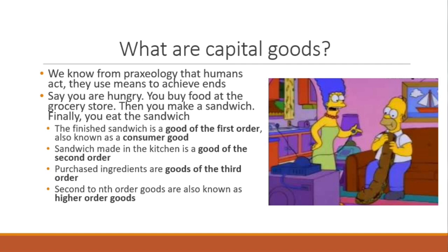This is basic Mengerian economics. We know from praxeology that humans act — they use means to achieve ends. Let's say you're hungry: you have an end, you want to feel satiated. So you buy food at the grocery store, then you make a sandwich, and then you eat the sandwich. The finished good is known as a good of the first order — a consumer good that can satisfy our ends. So the finished sandwich eaten in front of the television is the consumer good. Of course, that consumer good had to have been made: that first-order good was previously a second-order good.